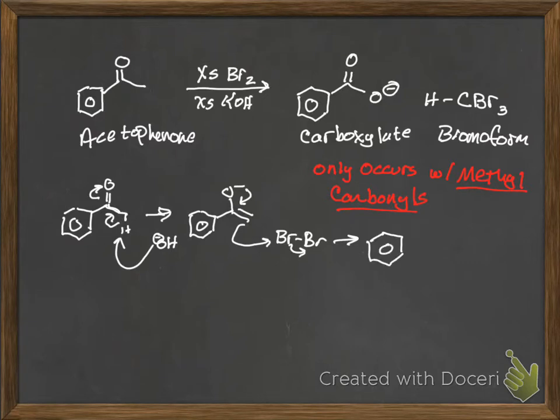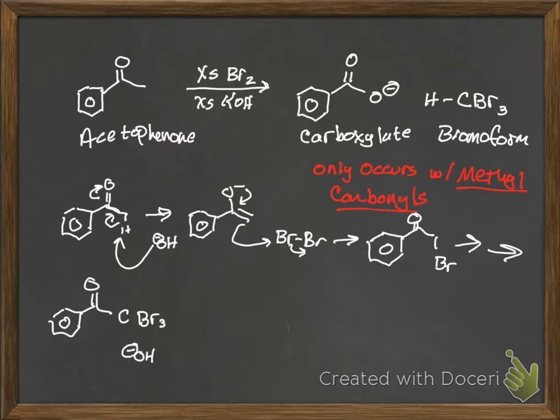Pull off the proton, enolate. You've noticed I've gotten kind of fast and loose with the reversible arrows. That's because that officially falls under the category of things that I really don't care about that much. So, we monobromonate. So, we're here.